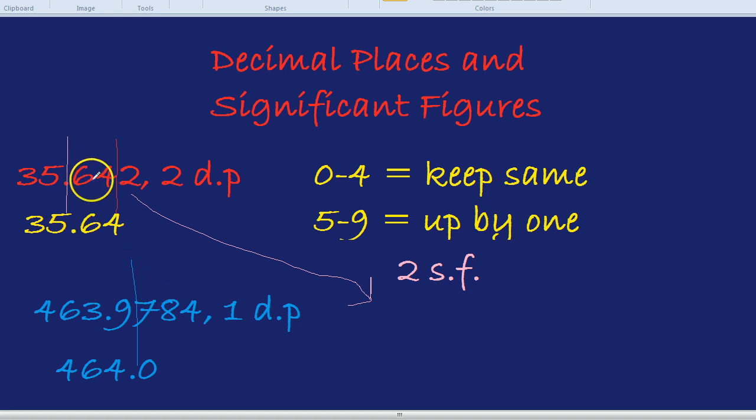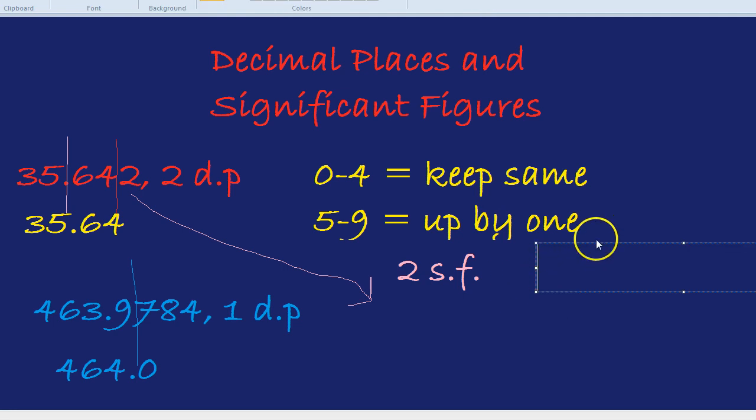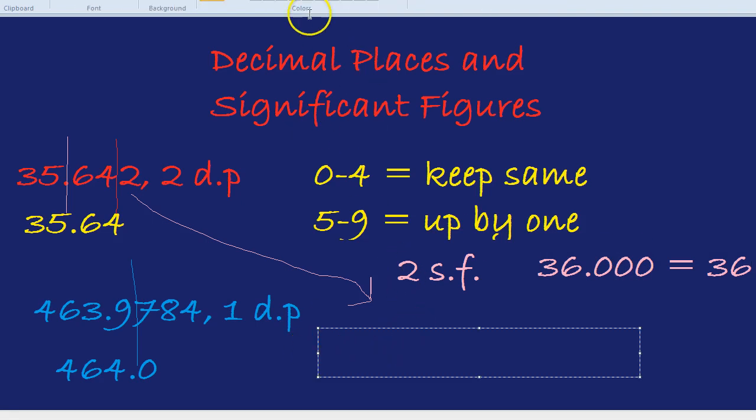The number to the right is a 6, which is between 5 and 9. So the number to the left, that 5, is going to go up by 1. Perfect. So we'd have 36 and all the other numbers become 0. Now that is exactly the same as 36, so you could just write 36.